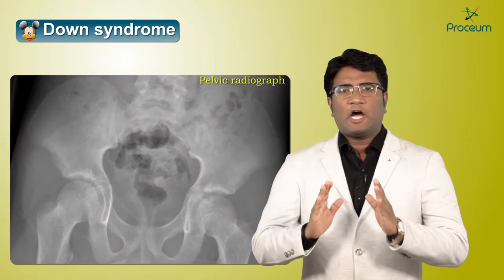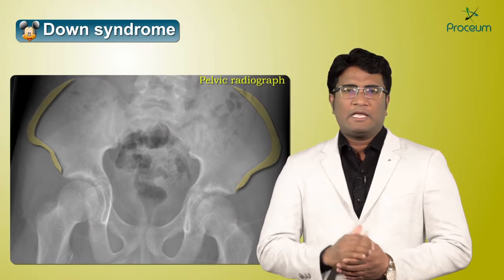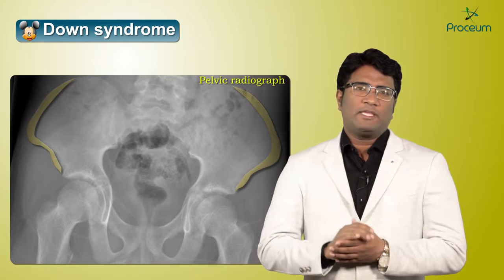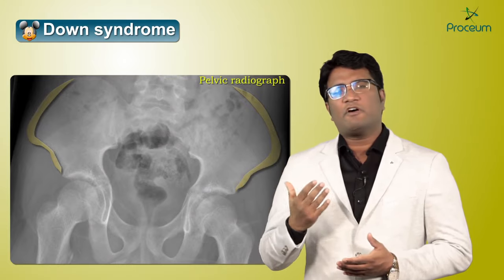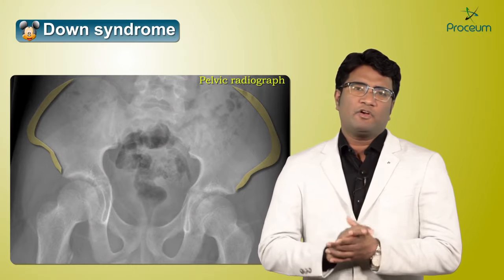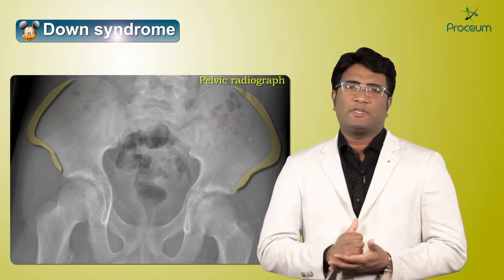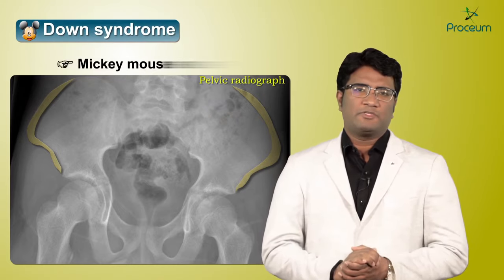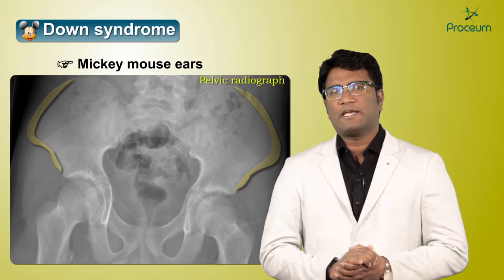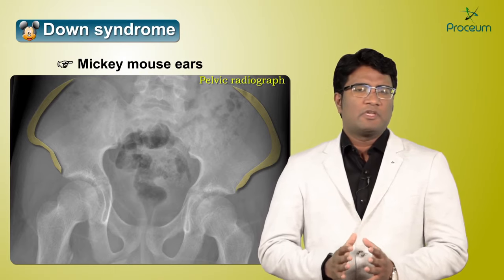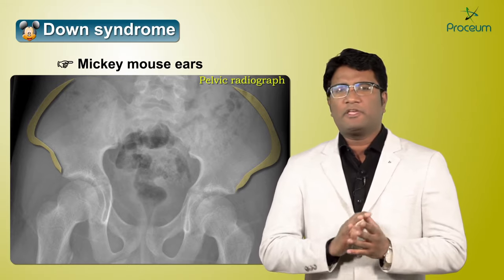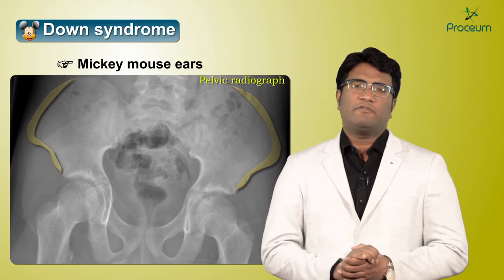Another important site where you should remember the Mickey Mouse appearance is on a pelvic radiograph. The outward flaring of the iliac wings resembles the ears of a Mickey Mouse. This outward flaring of the iliac wings is seen associated with Down syndrome. So, Mickey Mouse appearance on the pelvic radiograph is suggestive of Down syndrome.